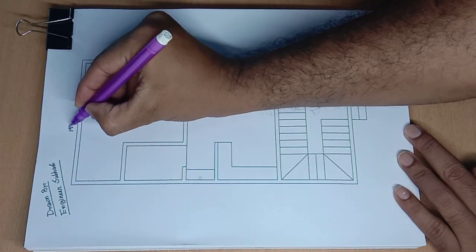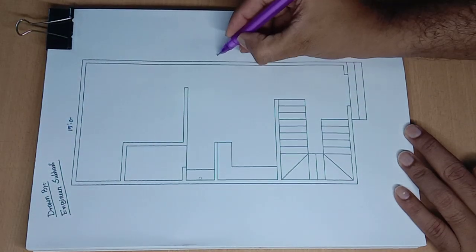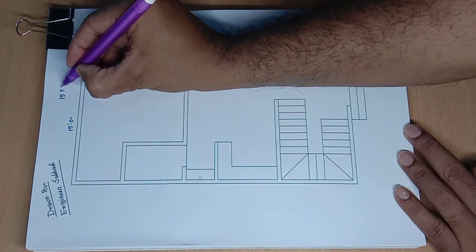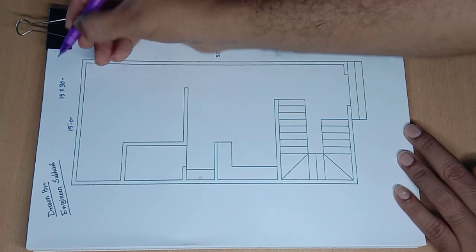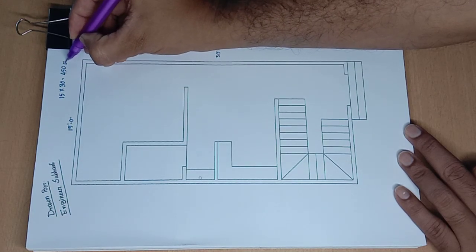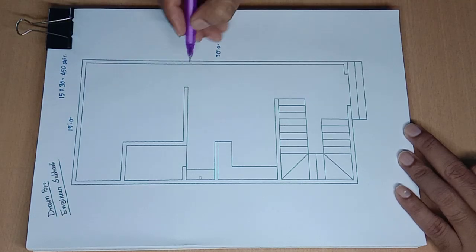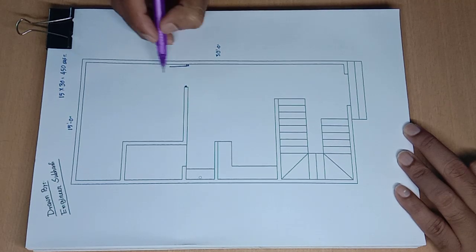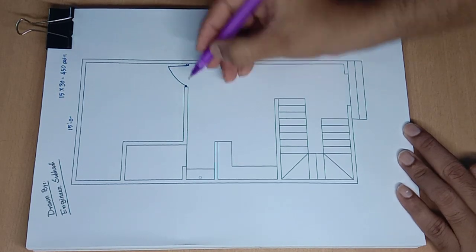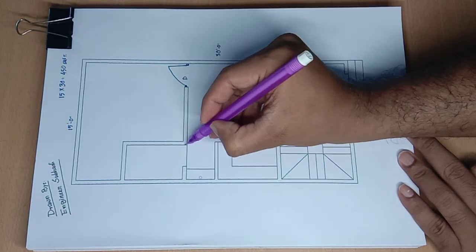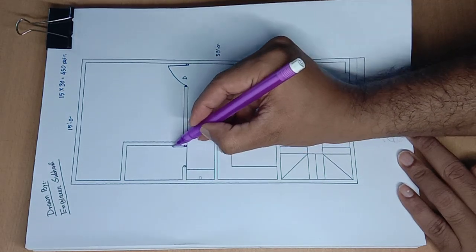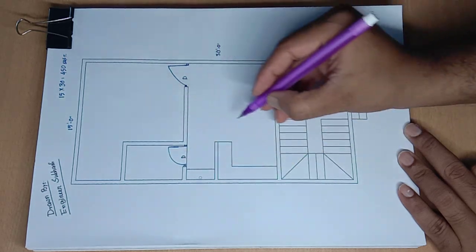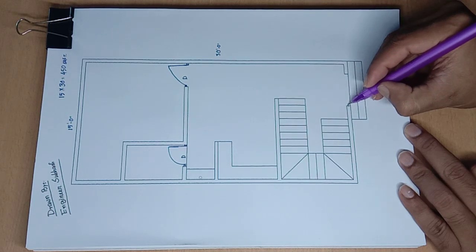15 feet by 13 feet, 15 into 13 equals 450 square feet house design. 3 feet 900 mm door D1, next door 2 feet 6 inch right door and main door.